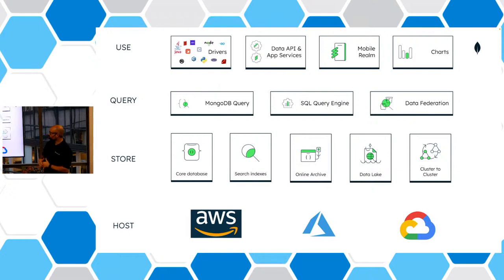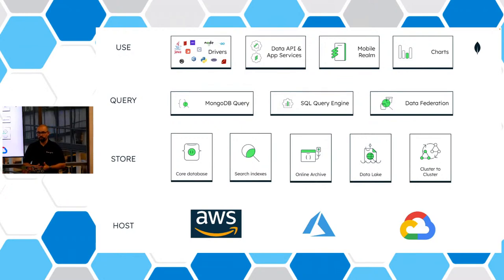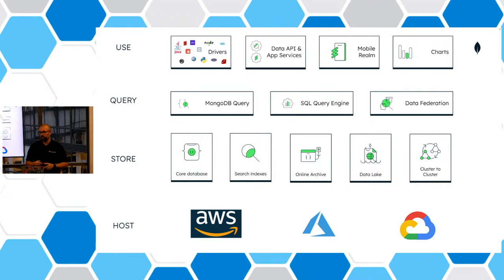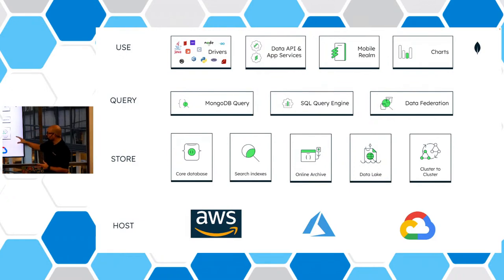To query MongoDB, you can use MongoDB Query Language, MQL. We also have a SQL query engine, so you can talk SQL to MongoDB directly if you prefer. And you can do data federation to pull in different data sources into the MongoDB engine, using MQL to query SQL, S3 buckets, and other MongoDB clusters from one single connection string. We can store and host data in a multitude of ways and across multiple clouds.